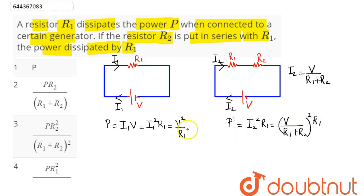Where we know the value of V squared by R1 is P1, so we can see this P' comes out to be V squared times R1 divided by R1 plus R2 whole squared.